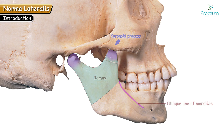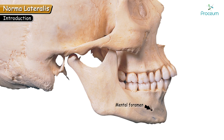Just in front of the oblique line, the most prominent foramen is the mental foramen. The mental foramen is well appreciated, and the structures passing through it are the mental nerve and mental vessels.